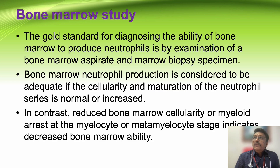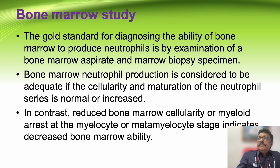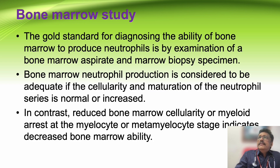In all conditions where the patient is not recovering from neutropenia, a bone marrow study should be done. Bone marrow neutrophil production is considered adequate if the cellularity and maturation of the neutrophil series is normal or increased. Reduced bone marrow cellularity or myeloid arrest at the myelocyte or metamyelocyte stage indicates decreased marrow ability. If there is peripheral destruction of WBCs, bone marrow production will be increased; if the bone marrow itself has a problem, production will be very low. Sometimes myelofibrosis or other abnormalities are found.